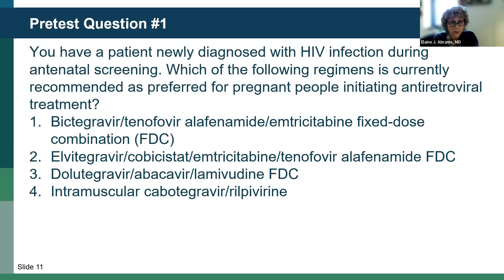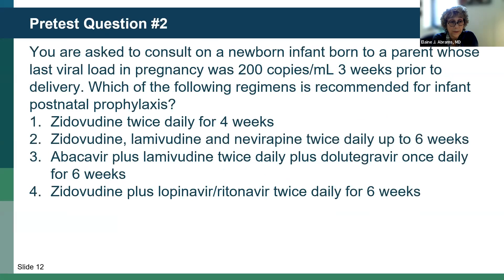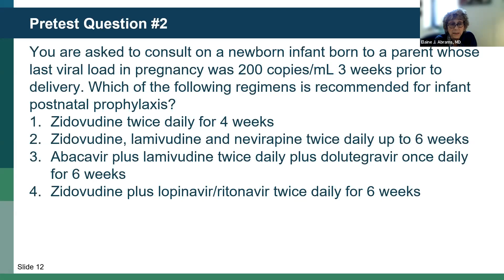We'll go on now to pre-test question number two. You're asked to consult on a newborn infant born to a parent whose last viral load in pregnancy was 200 copies per ml three weeks prior to delivery. Which of the following regimens is recommended for infant postnatal prophylaxis? Options: zidovudine twice daily for four weeks; zidovudine, lamivudine, and nevirapine twice daily up to six weeks; abacavir plus lamivudine plus dolutegravir twice daily once daily for six weeks; or zidovudine plus lopinavir/ritonavir twice daily for six weeks. Please complete the poll.